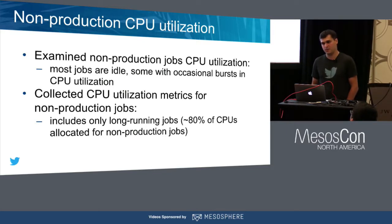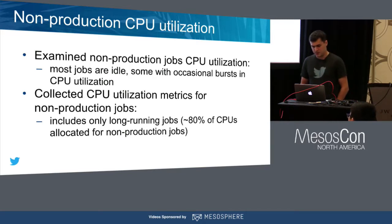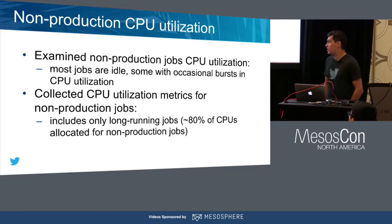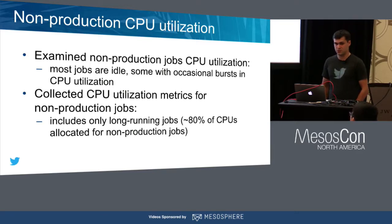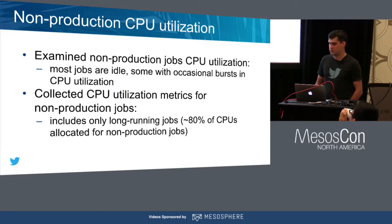This kind of jobs includes development, testing, or some batch processing which is not so critical. We found some utilization metrics for all jobs. We didn't include short-lived jobs because we cannot gain much from them. We're focusing on long-living non-production jobs, which account for about 80% of CPUs allocated for non-production jobs.